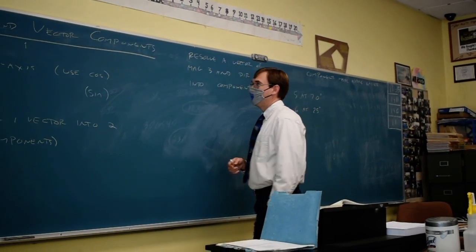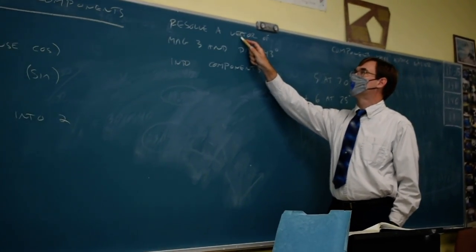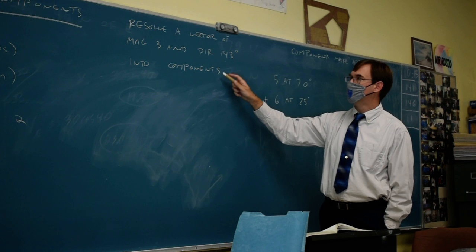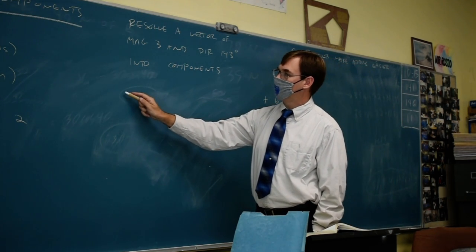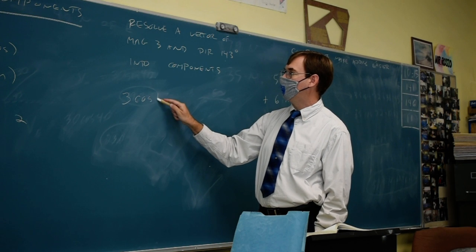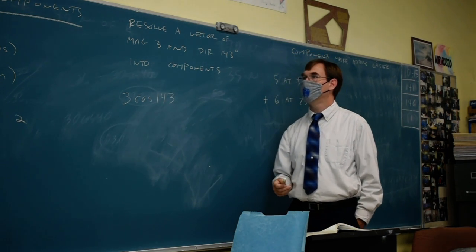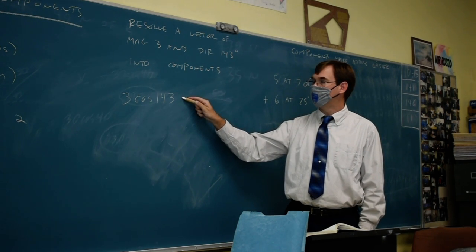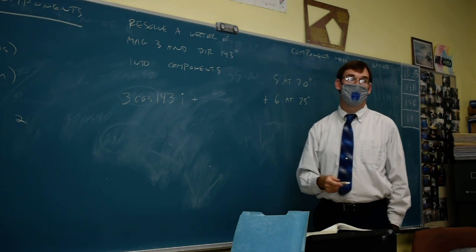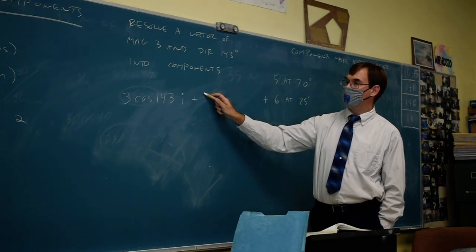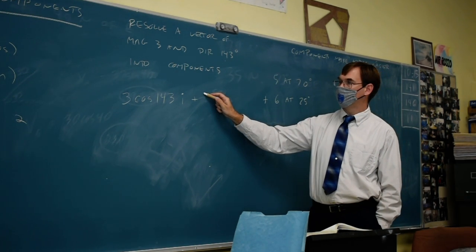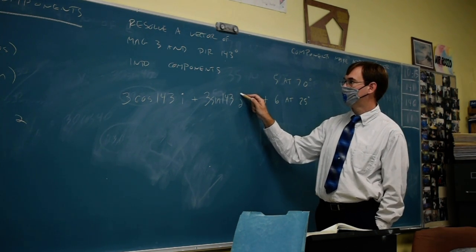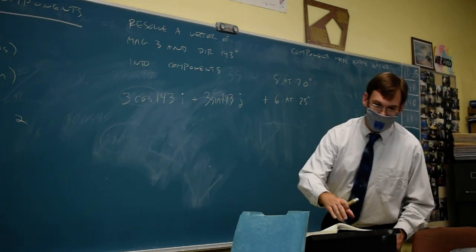A math type problem based off of this would say we want to resolve a vector of a magnitude of three in a direction of 143 degrees into components. I'm going to do three cosine 143 on my calculator, and in the world of trig books, they have named the cosine component i. I'll put a plus as a separator, and then I'm going to do a similar computation that'll be three sine 143, and that's going to be j.